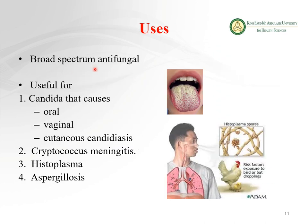Amphotericin B has broad-spectrum antifungal activity. It is useful for Candida, causing oral, vaginal, or cutaneous infections. It is also effective against cryptococcal meningitis, histoplasmosis, and aspergillosis. These are the different types of infections caused by fungi, so because it is broad spectrum it can be used for treatment of different types of fungal infections.